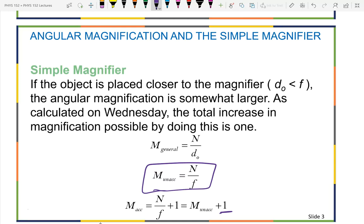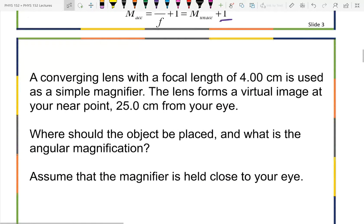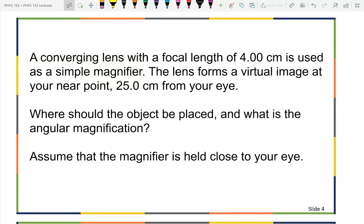For our work we will focus on unaccommodated viewing when talking about telescopes and microscopes. Another problem: a converging lens with a focal length of 4 centimeters is used as a simple magnifier. So how would I find the focal length of this lens? If I wanted to find the focal length, what would you do?